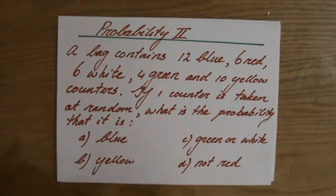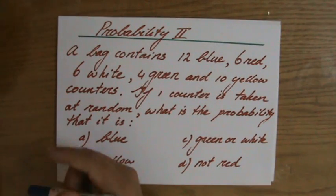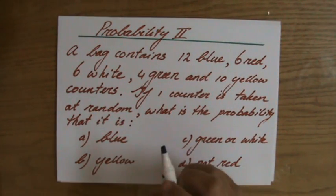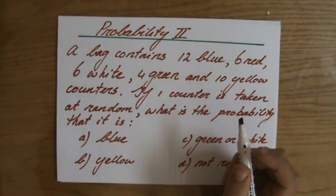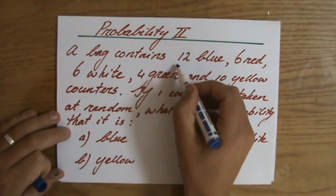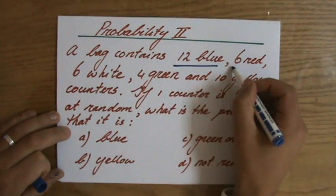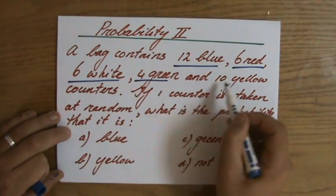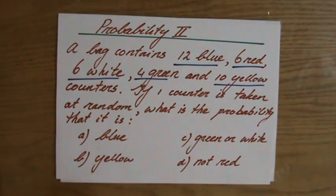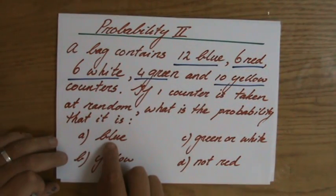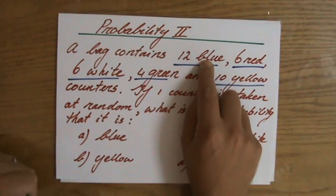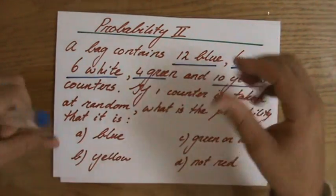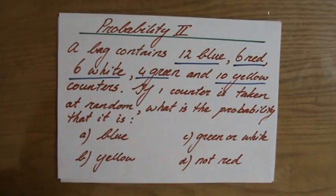So interesting question, a typical question involving probability. I'm just gonna highlight some important information. So I have 12 blue ones, 6 red counters, 6 white counters, 4 green and 10 yellow counters. And we are calculating probability here, so do not say well the chance to get a blue one is likely or unlikely. No, they want a fraction or a decimal there or a percentage if you like.